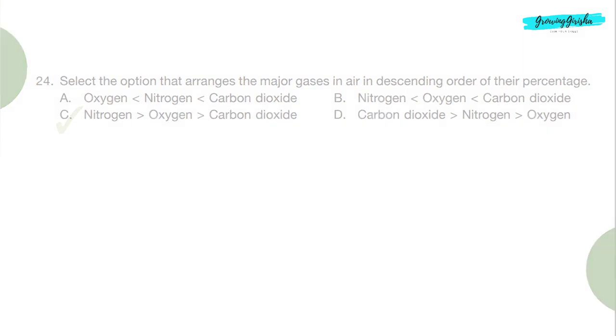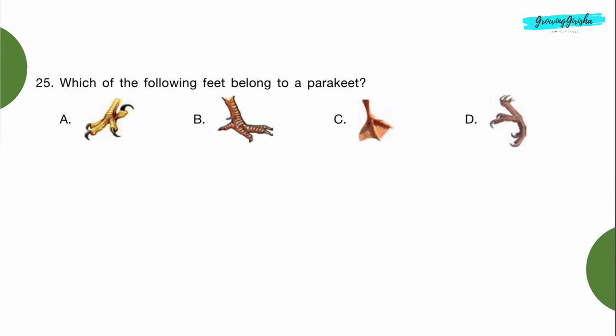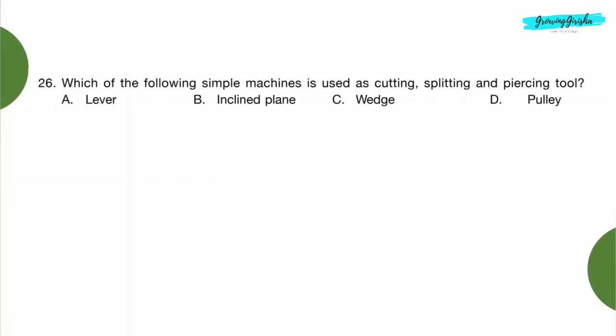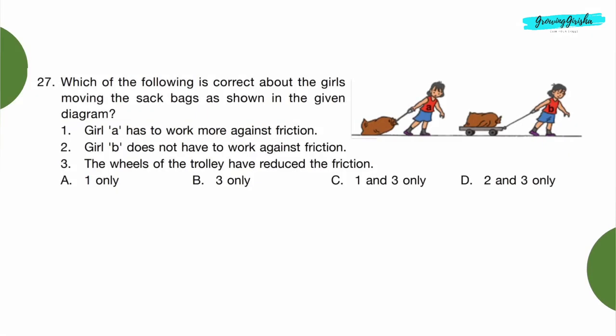Question 25: Which of the following feet belong to a parakeet? Option D. Question 26: Which of the following simple machines is used as cutting, splitting, and piercing tools? Option C: wedge. Question 27: Which of the following is correct about the girls moving the sack bags as shown in the given diagram? Girl A has to work more against friction. Girl B does not have to work against friction. The wheels of the trolley have reduced the friction. Option C: one and three only.